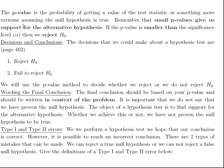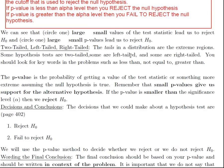The p-value is the probability of getting a value of your test statistic or something more extreme that's represented in the tail assuming the null hypothesis is true. We remember that small p-values gives us support for the alternative. So if p-value is less than the alpha level, then you reject the null and you accept the alternative.